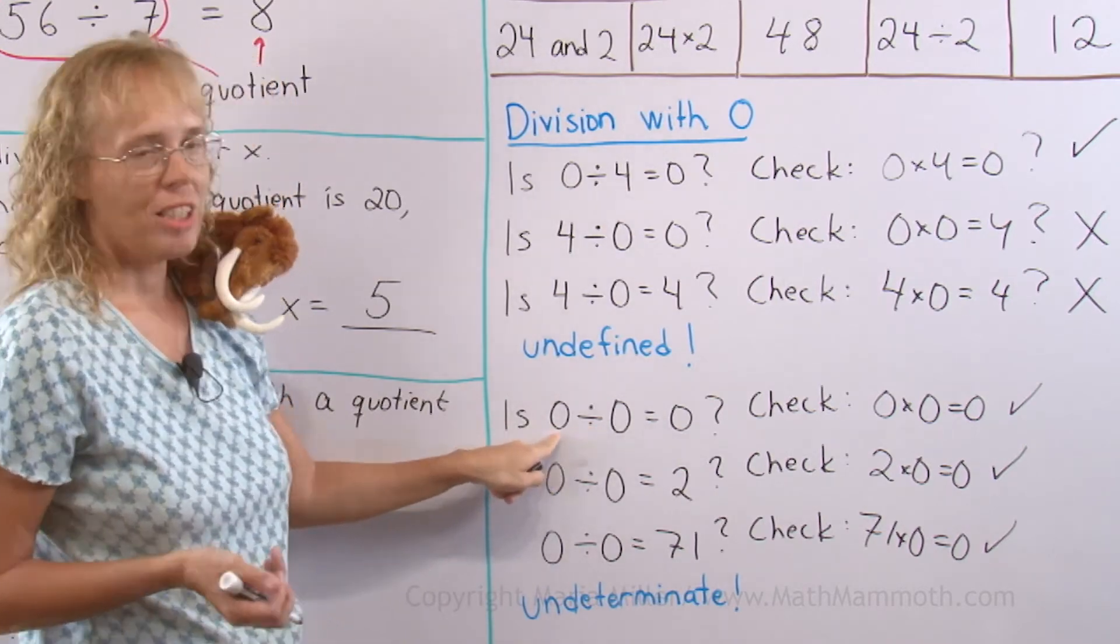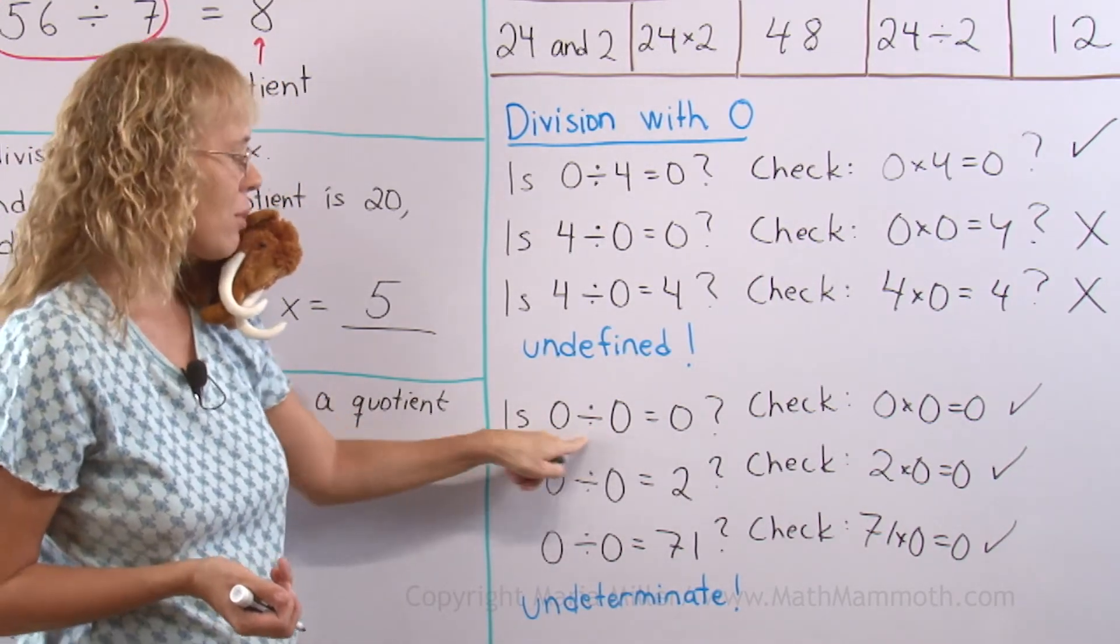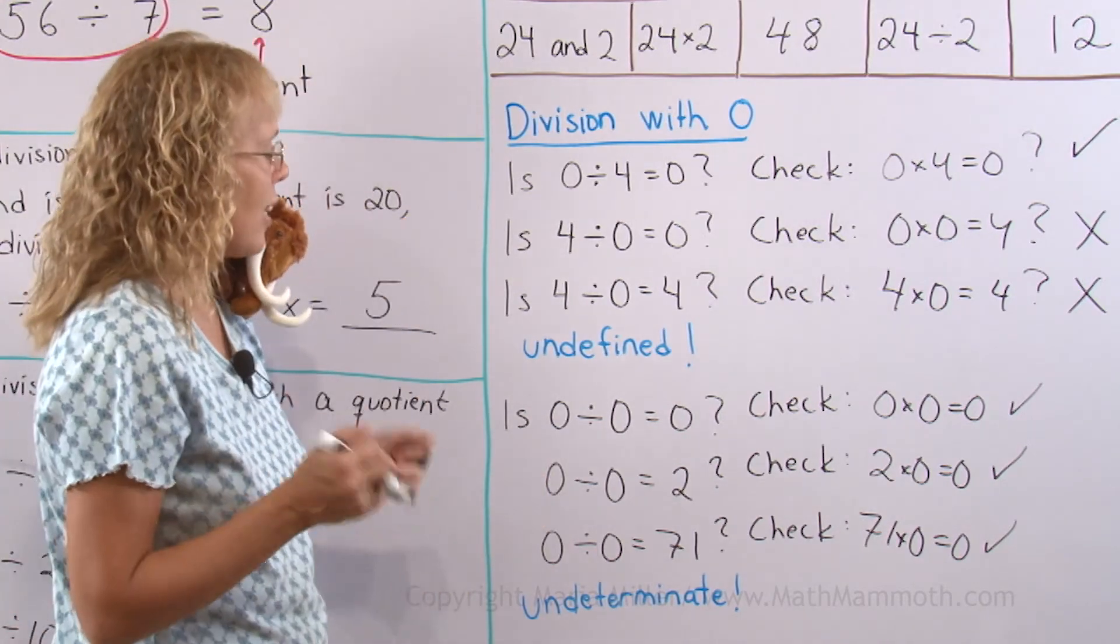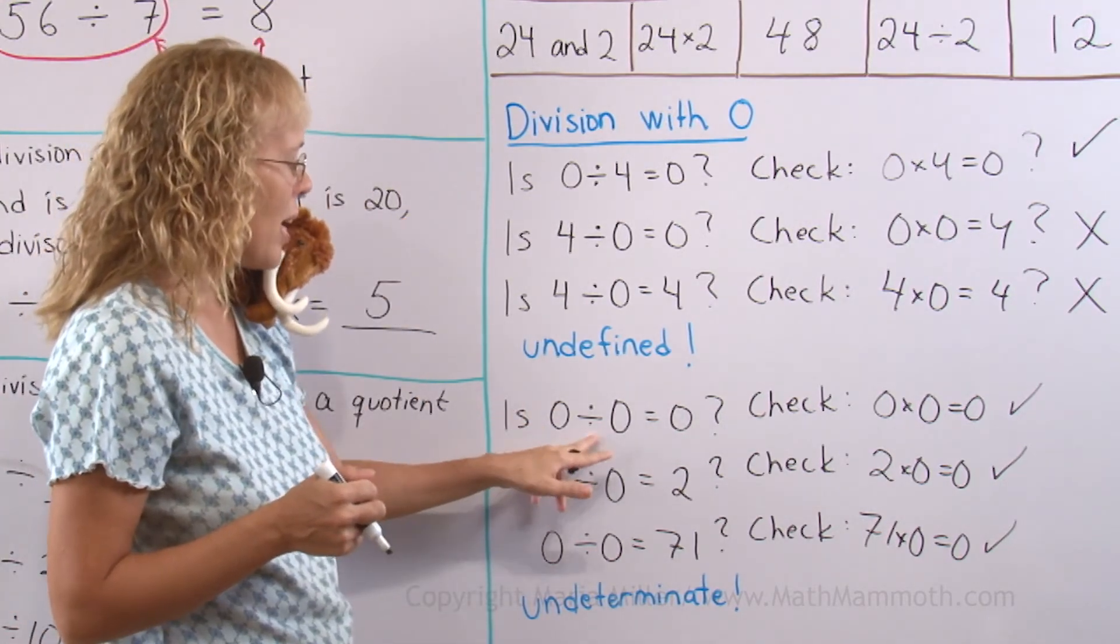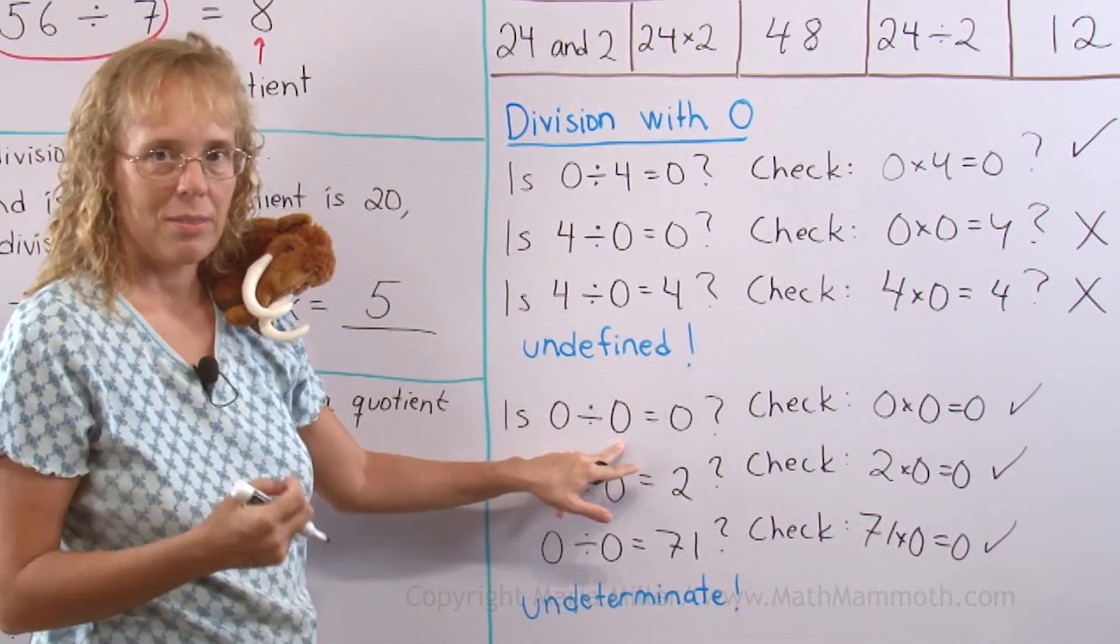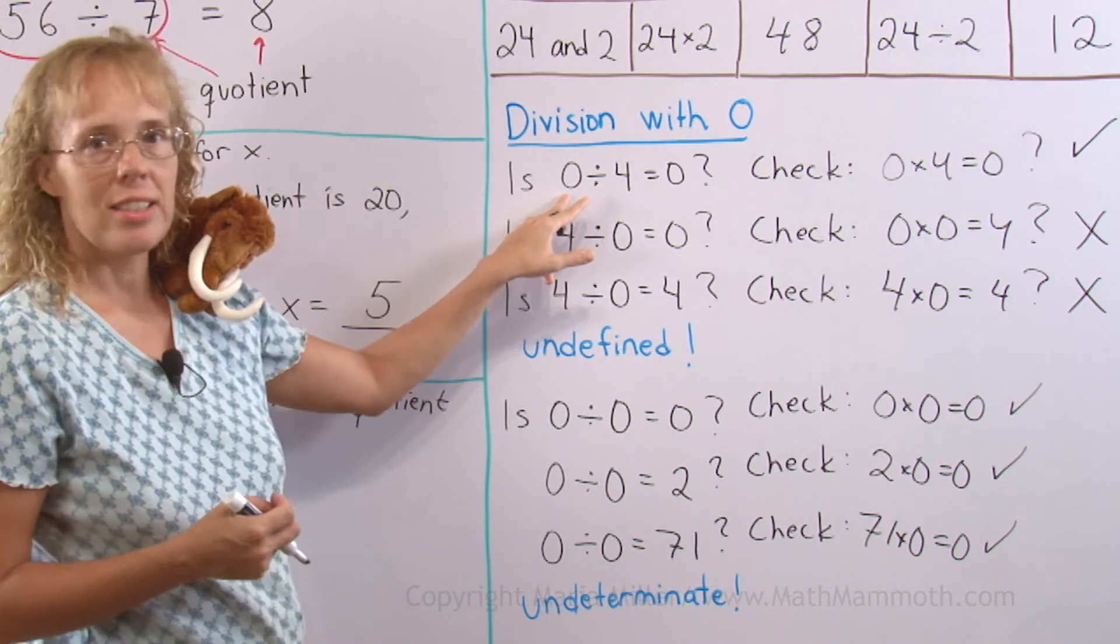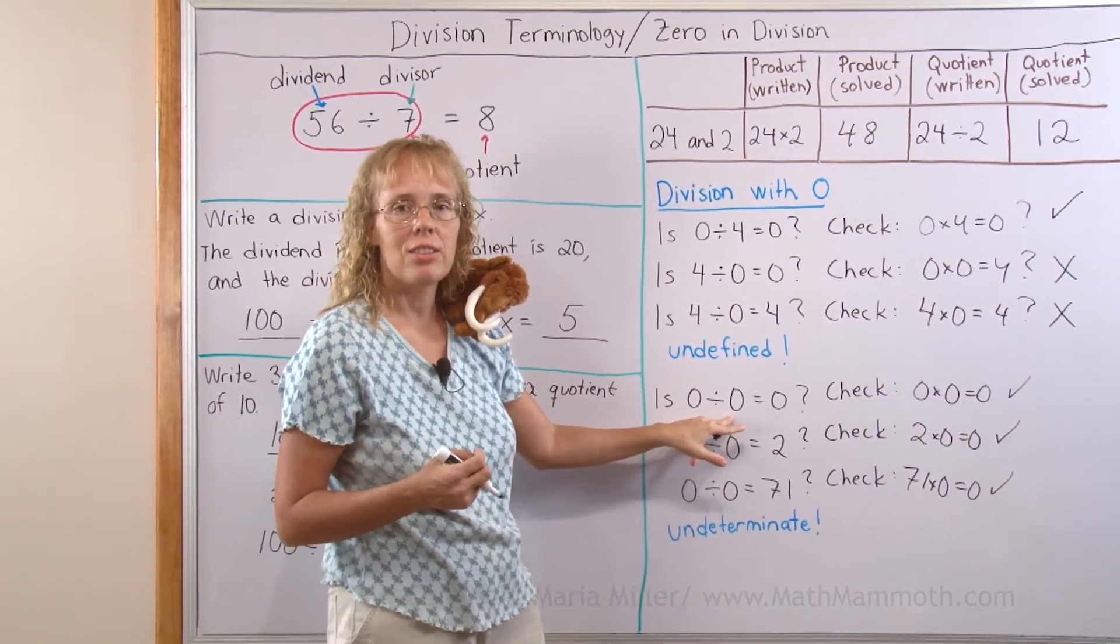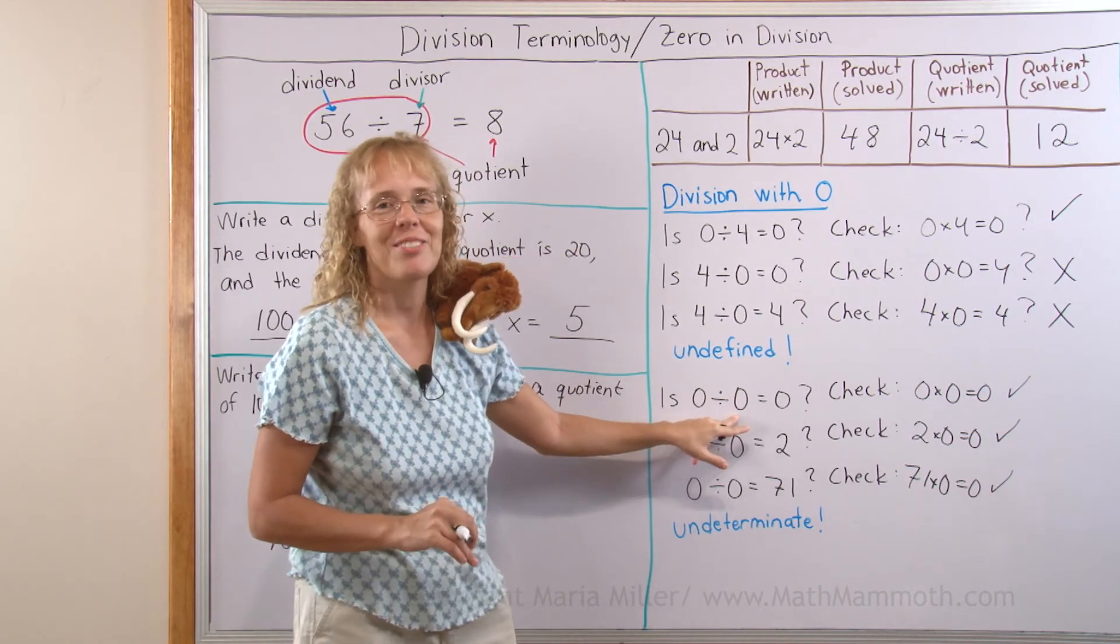So division by 0 does not work. Not even if you have 0 divided by 0. Not even this one. That's basically the scoop of it. That if you have division by 0, this second number here, the divisor is 0, then it does not work. If your dividend is 0, that's okay. But if the second number, the divisor is 0, it does not work. So keep that in mind.